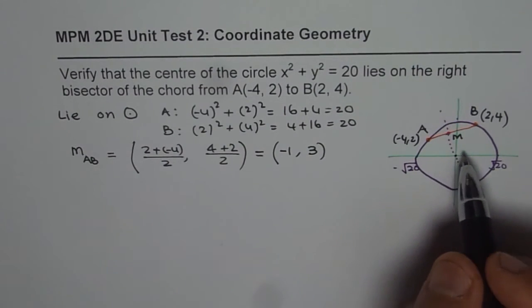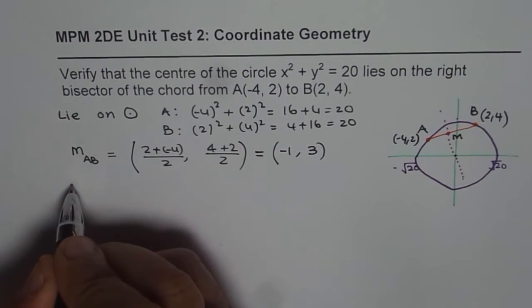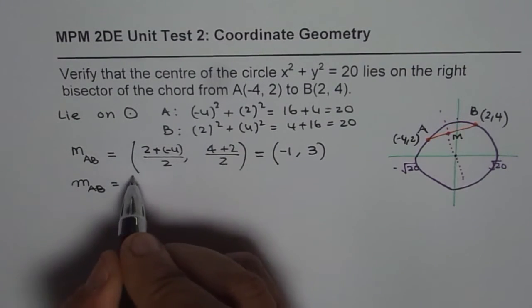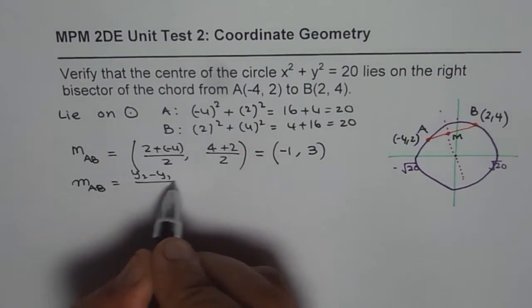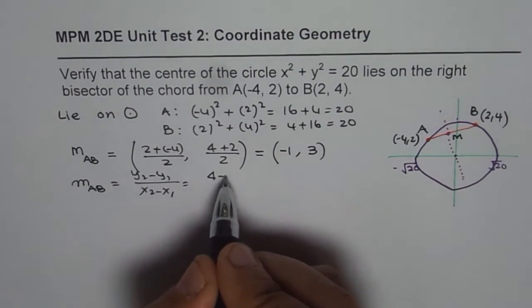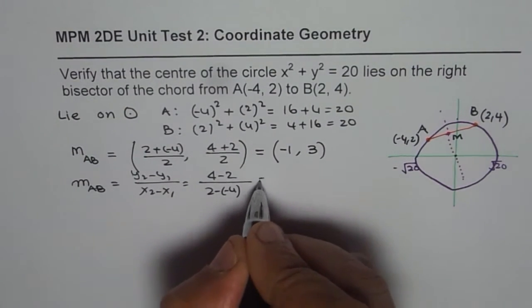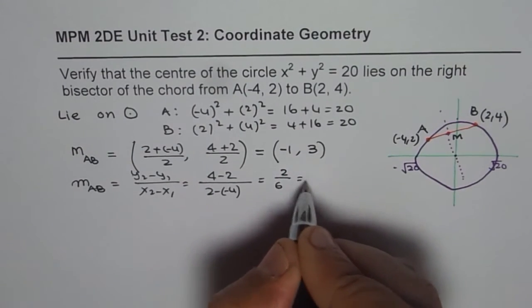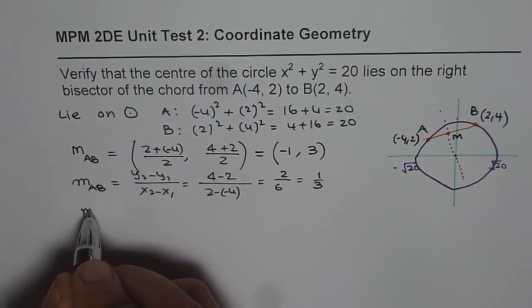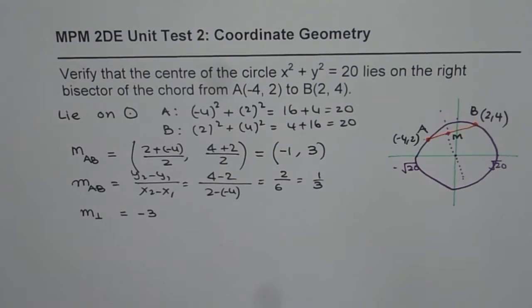To find right bisector, we need to find slope of AB and then take negative reciprocal. So let's find slope M of AB which is (y₂ - y₁)/(x₂ - x₁). So (4 - 2)/(2 - (-4)) = 2/6 which is 1/3. So that is the slope of AB. Now what is going to be the slope of the right bisector? Negative reciprocal, so it means -3.